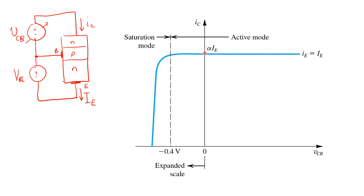However, once VCB becomes negative, we start slightly forward biasing the collector-base junction. Once we get down to around minus 0.4 volts, that forward bias is large enough that an appreciable amount of current is noticed, and the observed collector current starts decreasing. As the collector current decreases, the base current is increasing to provide the missing emitter current — remember, emitter current is kept constant throughout this plot. This continues as we keep decreasing VCB until, for large enough forward bias between base and collector, the current could eventually drop all the way to zero.